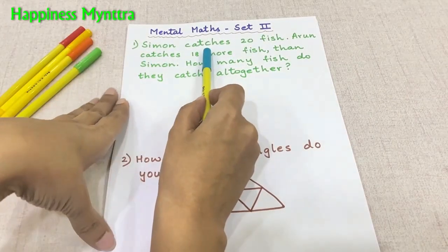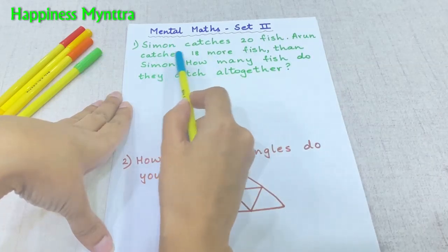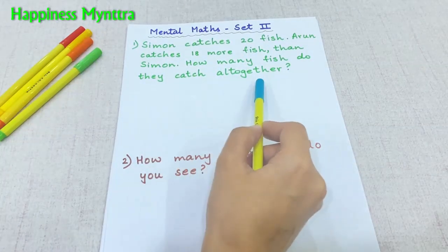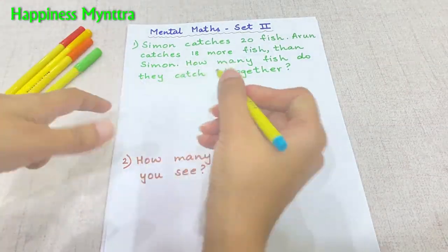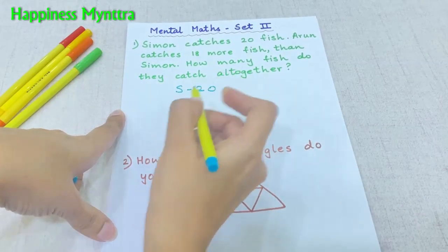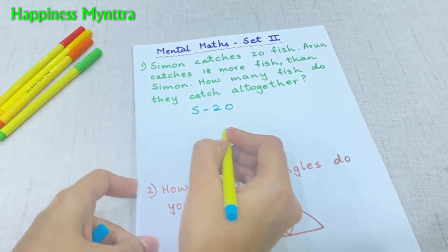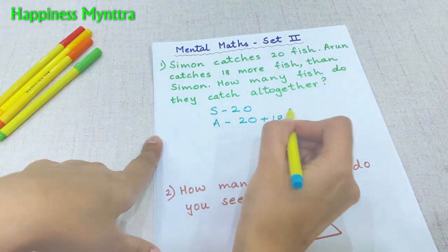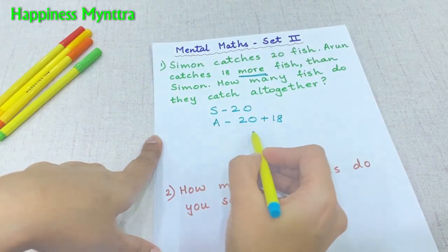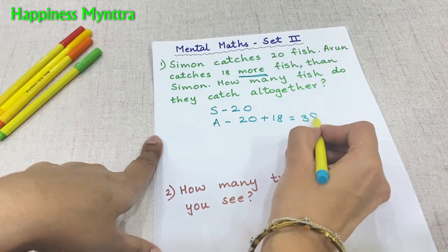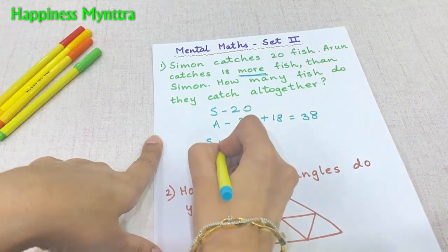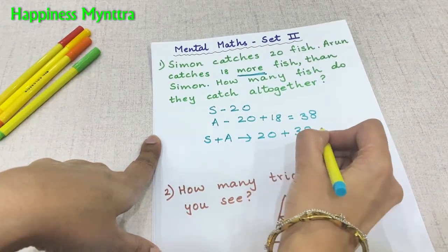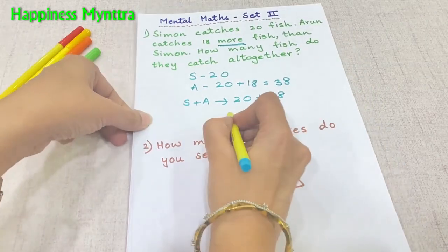Simon catches 20 fish. Arun catches 18 more fish than Simon. How many fish do they catch altogether? We know that Simon had 20 fish, whereas Arun has 20 plus 18 because he has 18 more fish. So 20 plus 18 gives us 38. The number of fish they have altogether would be 20 plus 38, which gives us 58.